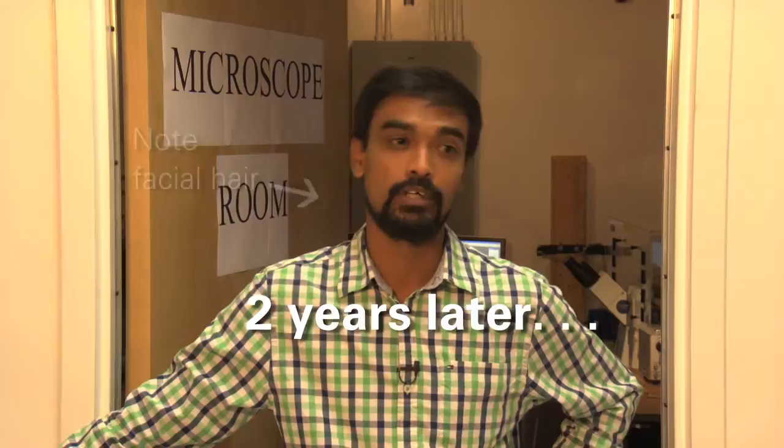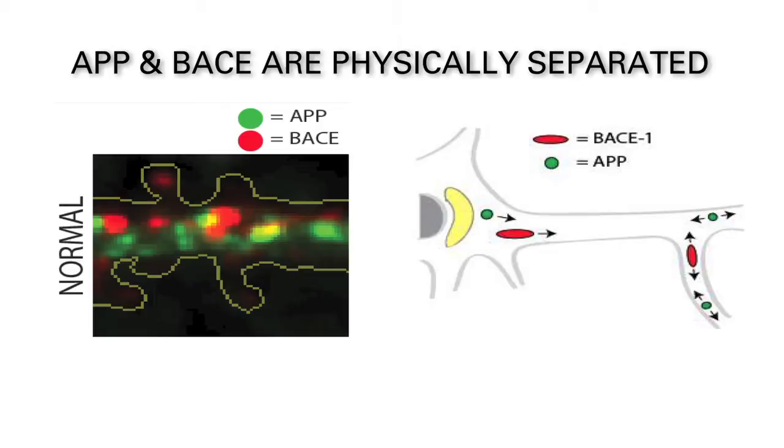Okay, so this is what I found. Sometime after BACE is made, neuron packages it in a different vehicle, physically separating it from APP. We think that this physical separation of APP and BACE is the reason why, despite having high levels of both proteins, most of us do not have large amounts of amyloid beta in our brains.